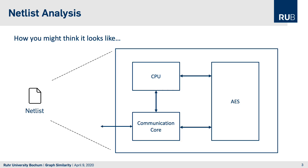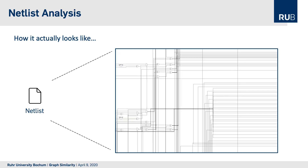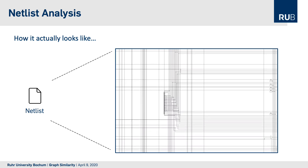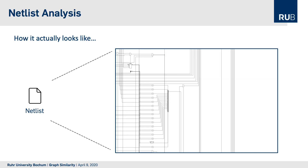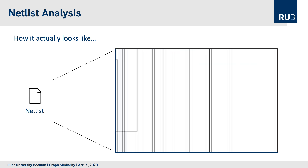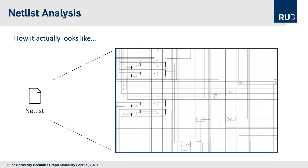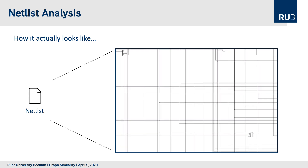When you think of netlist analysis, you might think that a netlist can be easily divided into all its components — the CPUs, the IPs, the communication cores, and all the interfaces in between. But in reality it's a bit different. A netlist looks more like a sea of gates: thousands of gates and connections between them, where we first need to make sense of module boundaries and structure before we can dive into more advanced analysis.